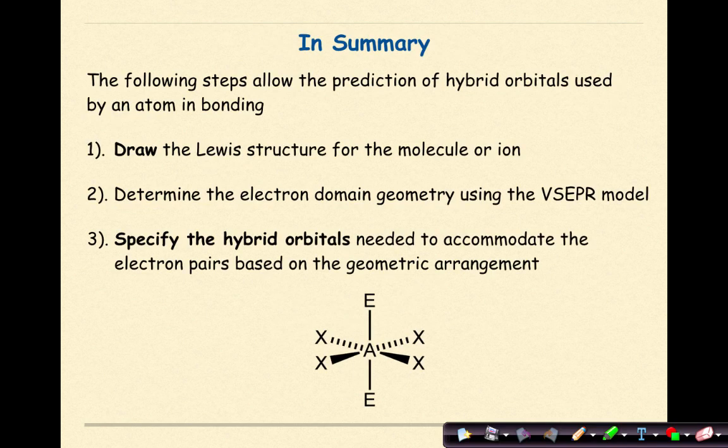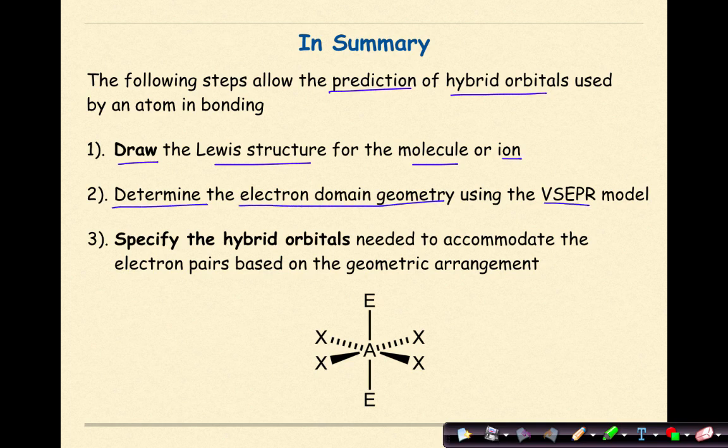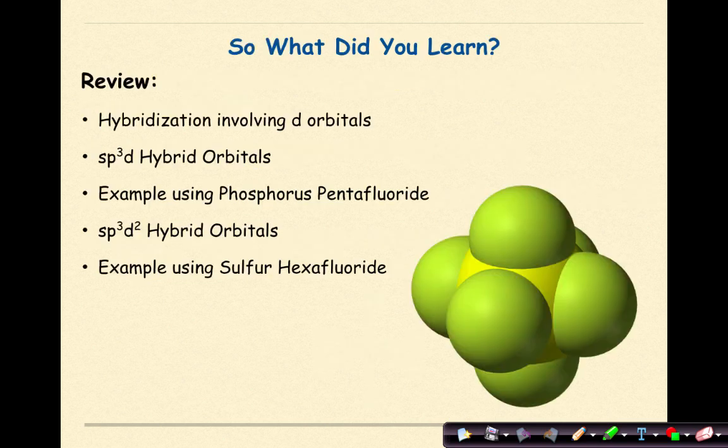In summary, the following steps allow the prediction of hybrid orbitals used by an atom in bonding. Draw the Lewis structure for the molecular ion. Determine the electron domain geometry using the VSEPR model. Specify the hybrid orbitals needed to accommodate the electron pairs based on the geometric arrangement. So what did we learn?